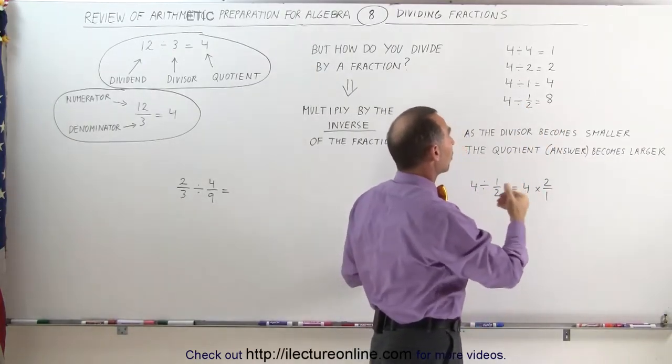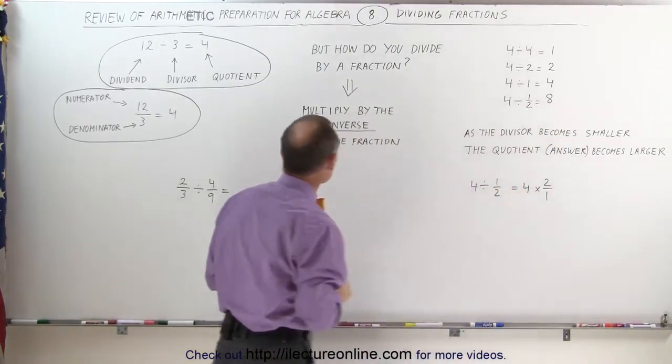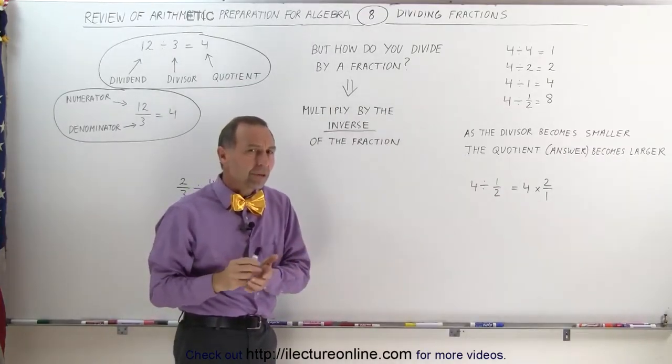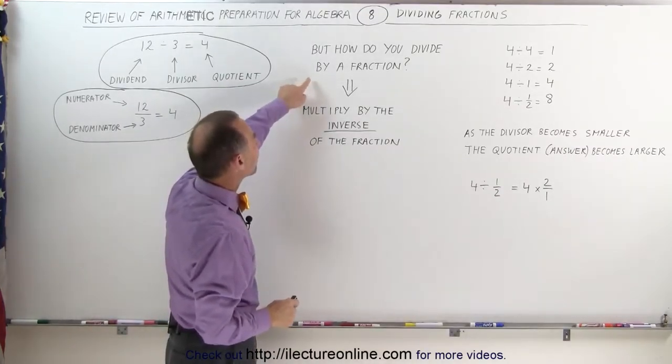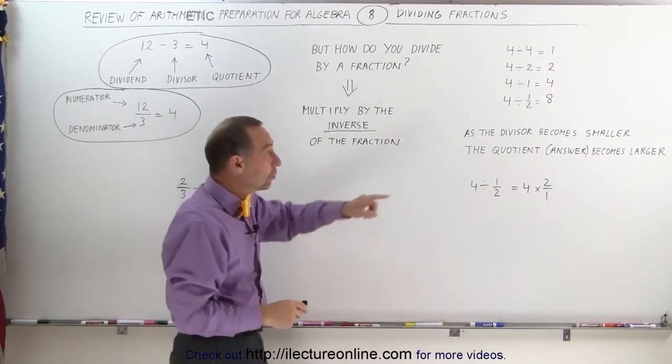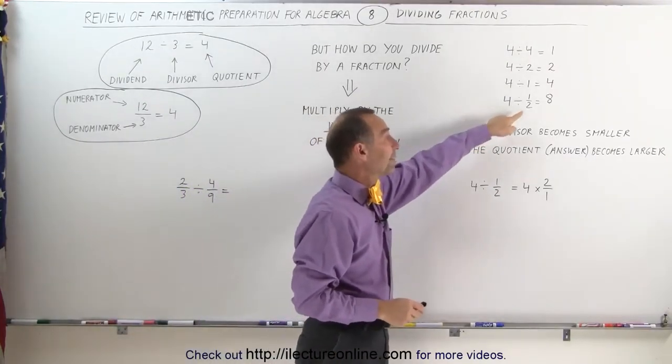So what we see here in this pattern is that as the divisor becomes smaller—and here's your divisor: 4, 2, 1, 1 half—as we make it smaller, the answer, called the quotient, becomes larger.